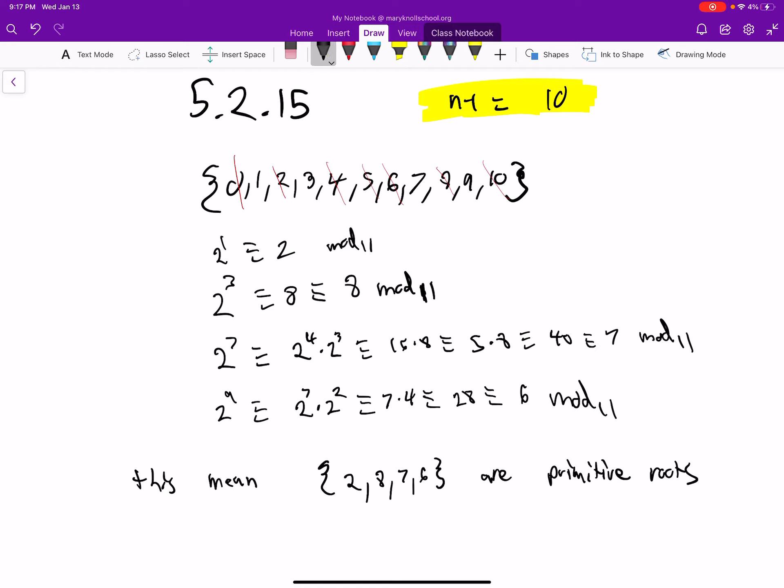Then you look at what's relatively prime to 10. So that's going to be all these values: 1, 3, 7, 9.